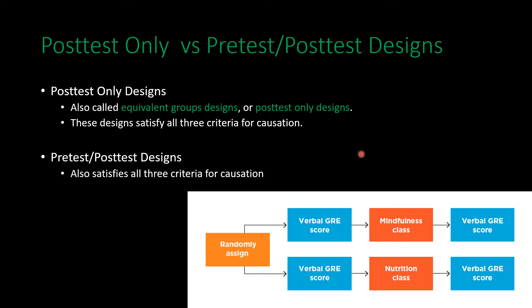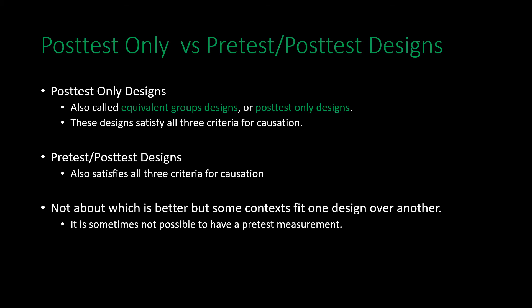Pre-test post-test designs also satisfy all three criteria for causation, but have a slightly different structure. You randomly assign people to two different conditions but now measure them on a dependent variable first, give them the manipulation, and then measure them on that same variable again. For example, randomly assigning people to receive either a mindfulness class or a nutrition class and measuring the impact on verbal GRE scores — you get a baseline of GRE scores, give them the interventions, and then measure them again. In effect, you're looking at the change over the independent variable, not just the difference across groups.